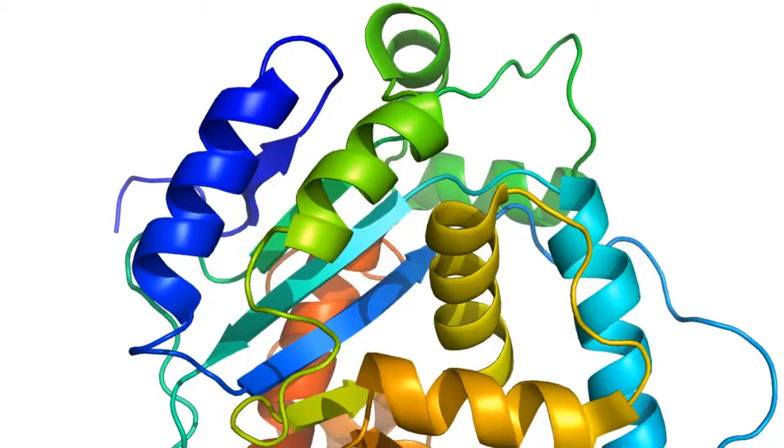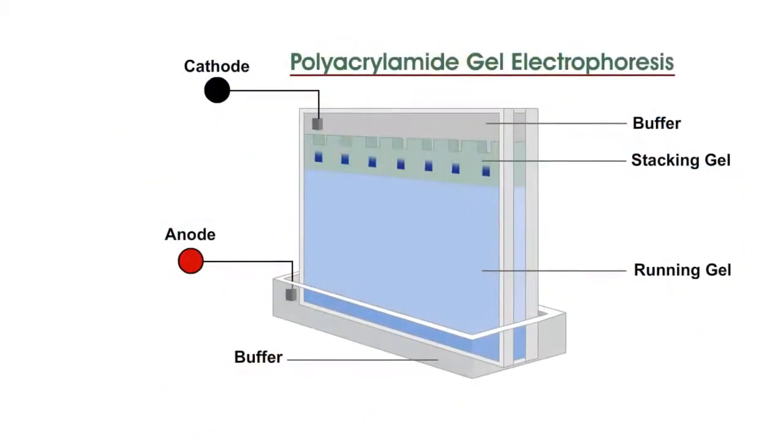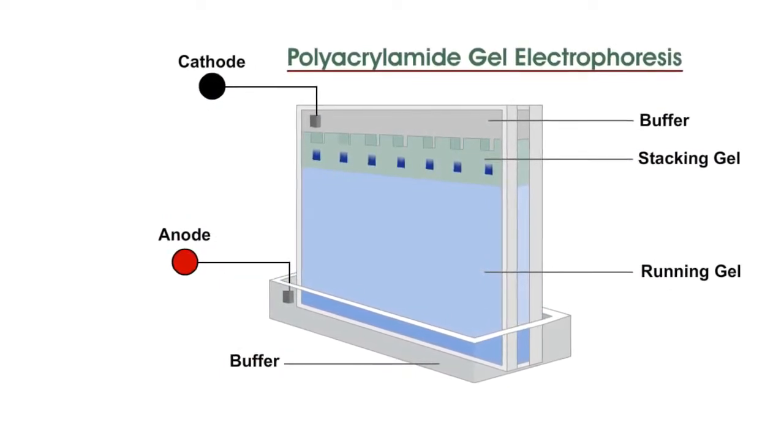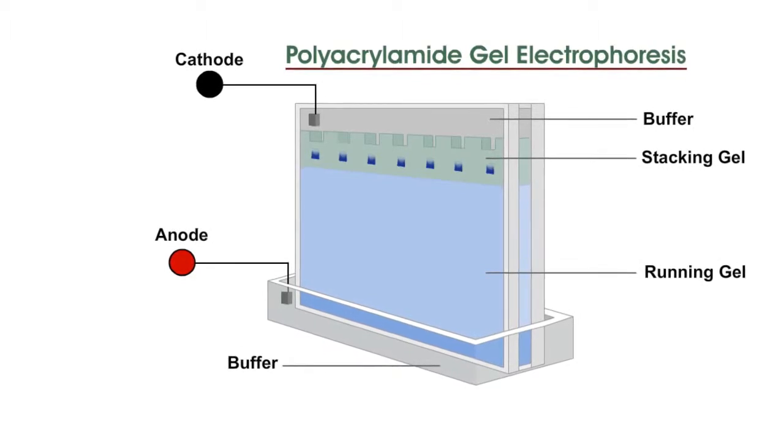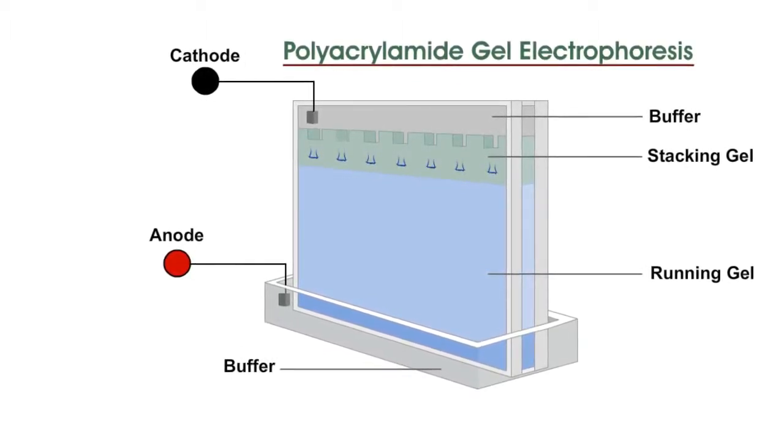For this, protein molecules of different shapes and sizes need to be denatured. The proteins covered by SDS are negatively charged. When loaded onto a gel matrix and placed in an electric field, the proteins will migrate towards the anode or positively charged electrode. They are then separated by a molecular sieving effect based on size.